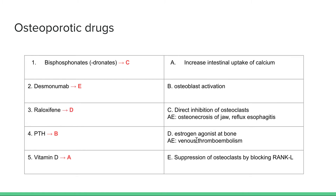Raloxifene is your selective estrogen receptor modulator. One of the adverse effects you want to remember about estrogen receptors is venous thromboembolism. PTH causes osteoblast activation — we have a drug called teriparatide, which is recombinant PTH, which we can use for formation of new bone.